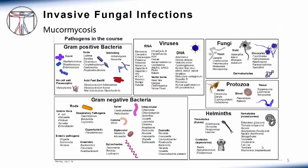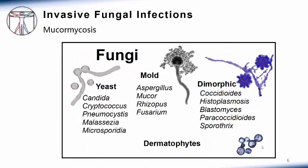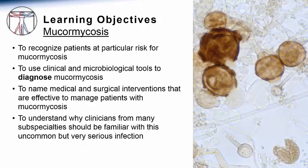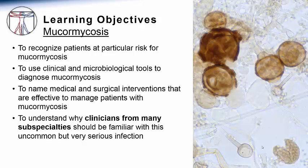In our pathogen map, these fungi are located in the fungal group and specifically in the mold subcategory. They are represented by two fungal names: mucor and rhizopus. The learning objectives for this presentation are to recognize patients at particularly high risk for the development of this lethal infection mucormycosis, learn about the tools to diagnose this infection, think through the interventions to manage patients once the diagnosis is made, and consider why clinicians from many different subspecialties must be able to recognize this potentially serious infection.